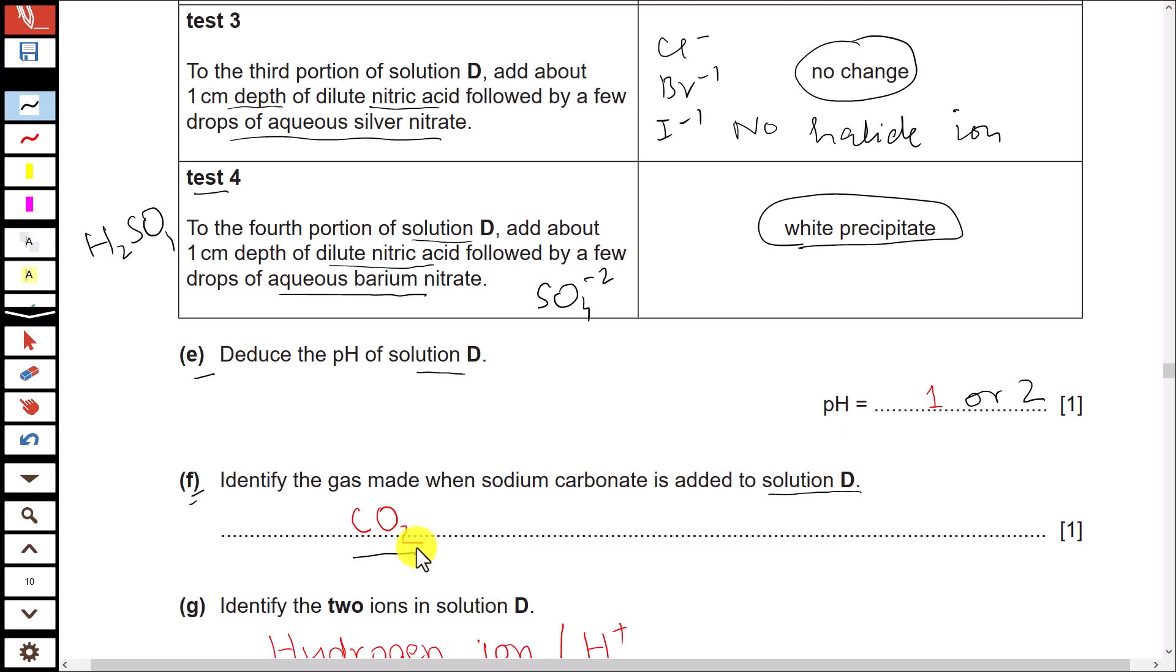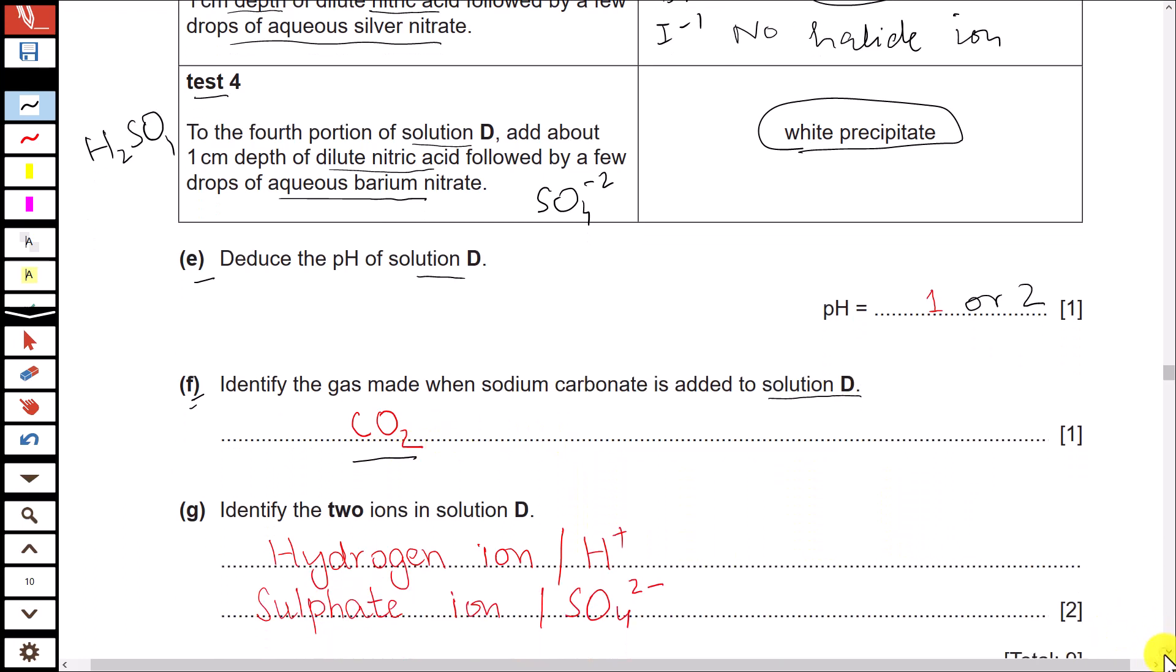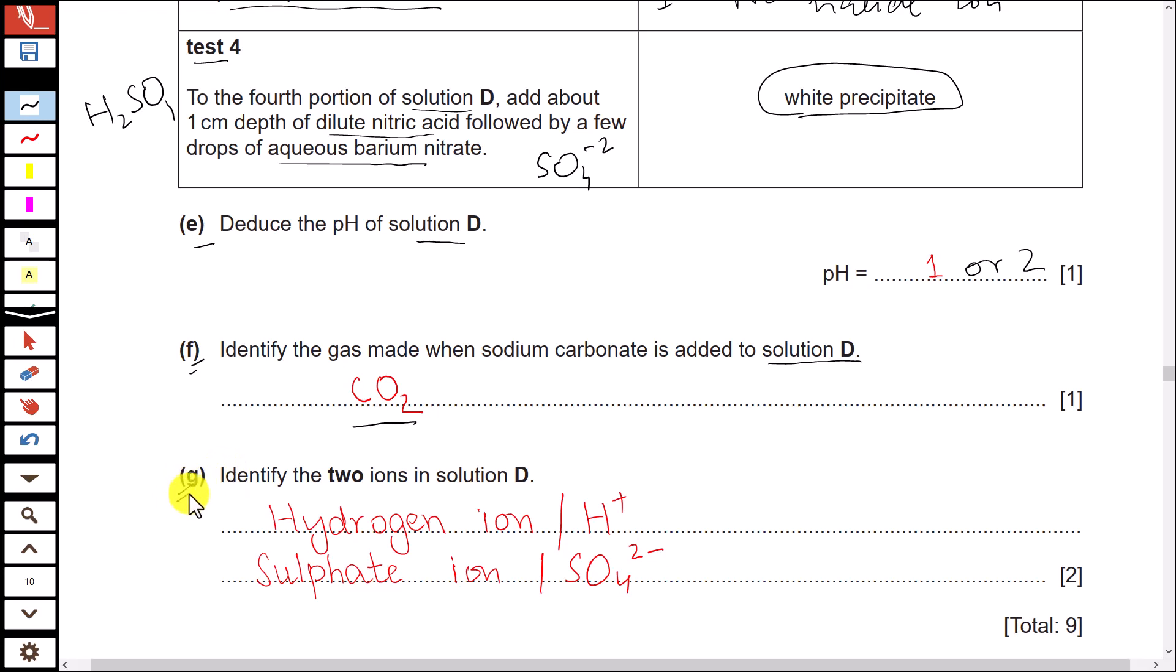Because it is turning limewater milky. Last part of this question: identify the two ions in solution D. We have already identified one of the ions is hydrogen ion and the other is sulfate ion.